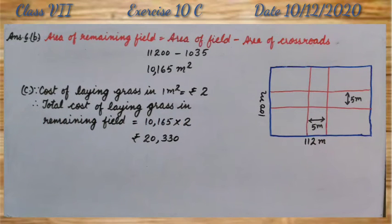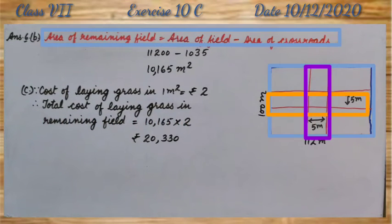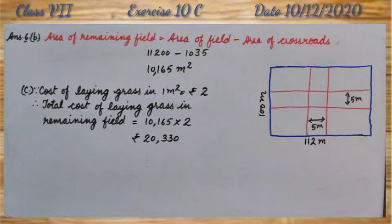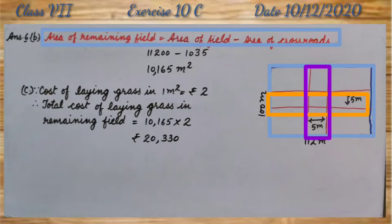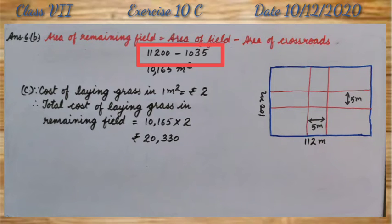B part, area of remaining field. We can find area of remaining field by subtracting area of crossroads from area of field. So, that is, 11,200 minus 1035 equal to 10,165 meter square.